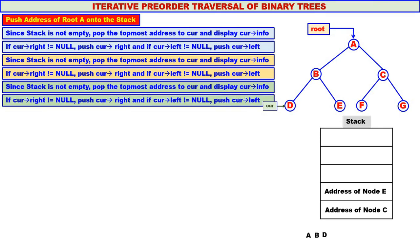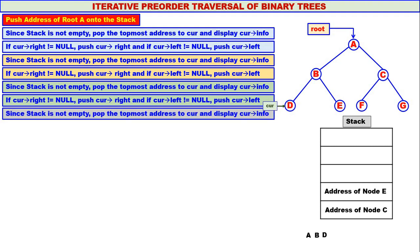The right child of D is null and the left child of D is also null, so there is no pushing. Again we check the stack — it is not empty — so we pop the topmost address, which is the address of node E, and assign it to curr. We display curr's info, so E is displayed.